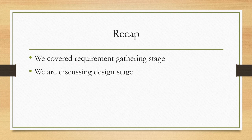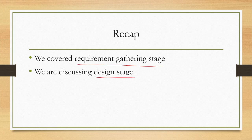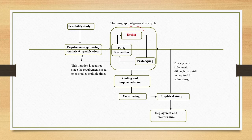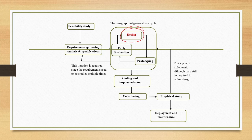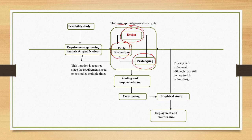So far, we have covered in detail the requirement gathering stage, including how to gather and specify functional as well as non-functional requirements. Currently, we are discussing the design stage. When we talked about design, we referred to two types: interface design and code design. For interface design, the design-prototype-evaluate cycle is important — we prototype the design idea and get it evaluated for usability with expert users.